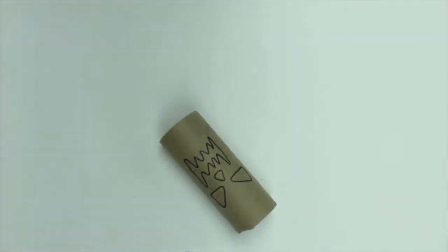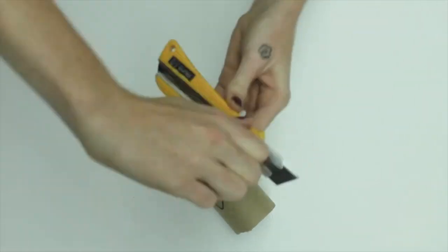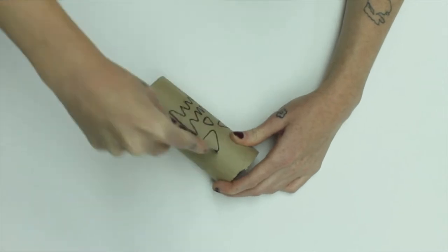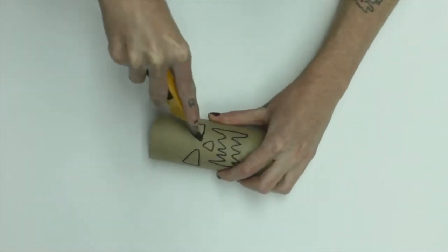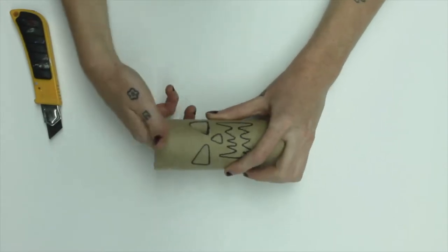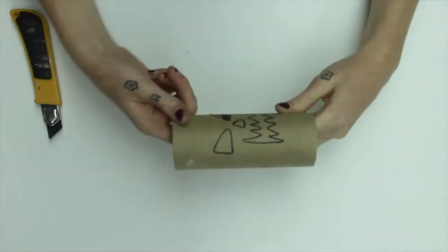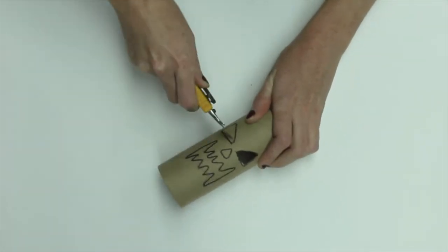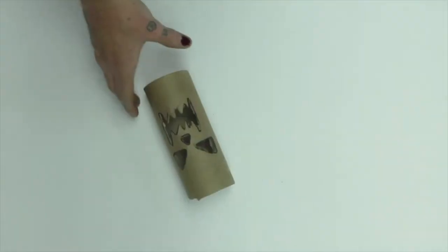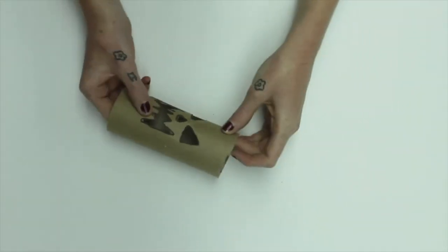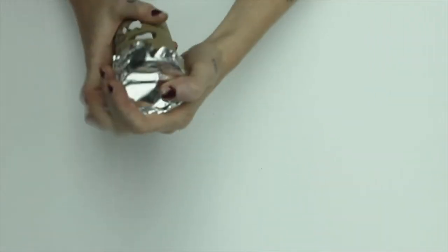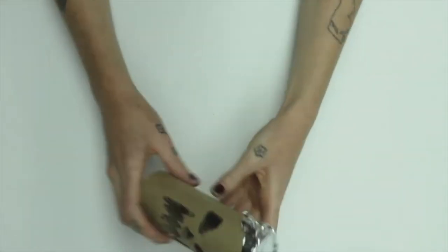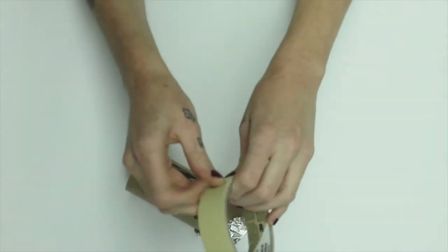I then used my X-Acto making sure that safety lock is on and always cutting away from my hand. Now the cardboard tube that I'm using here was pretty stiff so it took me a few tries. I got a little frustrated. Then place your aluminum foil on top and use some painter's tape to seal it down.